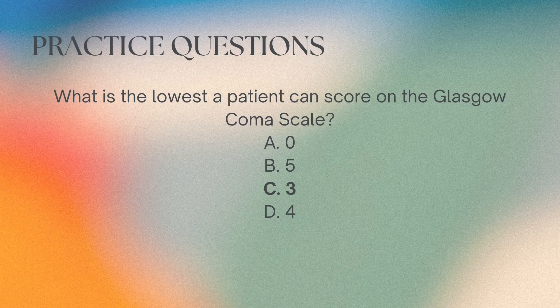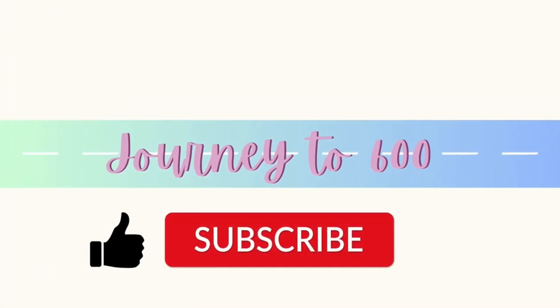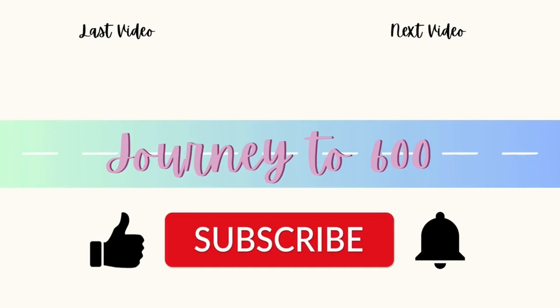The correct answer is C. What is the lowest a patient can score on the Glasgow Coma Scale? It's important to know the numbers included in each response category: they range from 1 to 4 for eye opening, 1 to 5 for verbal, and 1 to 6 for motor response. Since they all start with 1, the lowest possible score on the scale is 3. Thank you again for joining us on Journey to 600 — please like, subscribe, and turn on notifications so you know when we post our next video.